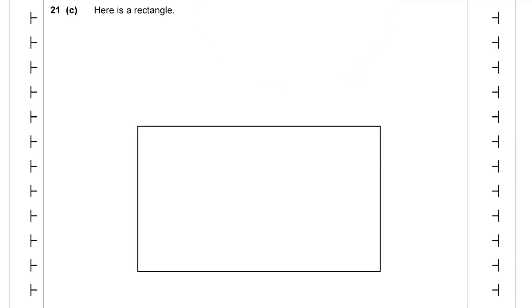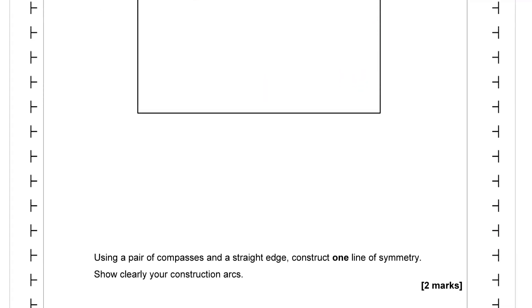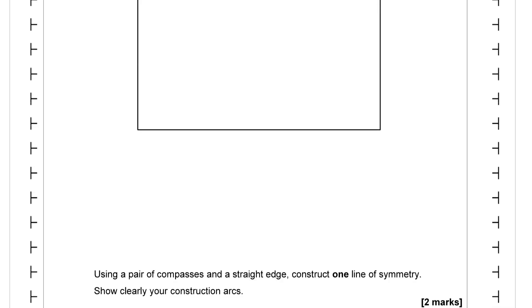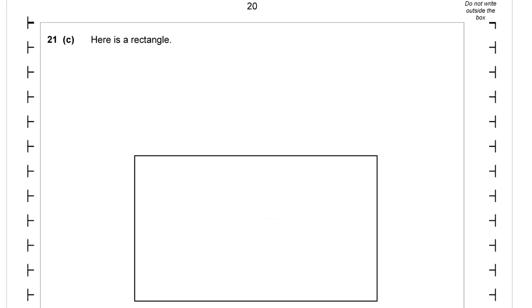21C. Here is a rectangle and we need to, using a pair of compasses and a straight edge, construct one line of symmetry. Show clearly your construction arcs. Okay, so we're told it's a rectangle and you should know then that the lines of symmetry of a rectangle go like that or like that. So, if we can take this line here and we can construct a perpendicular bisector, then that line should be one of my lines of symmetry. So, that's what I'm going to try and do. I'm going to use my compasses now to construct that line of symmetry.